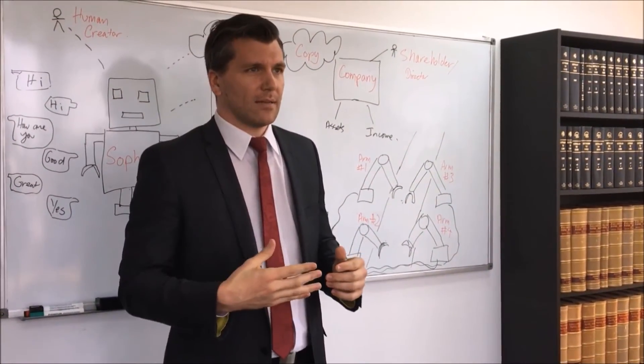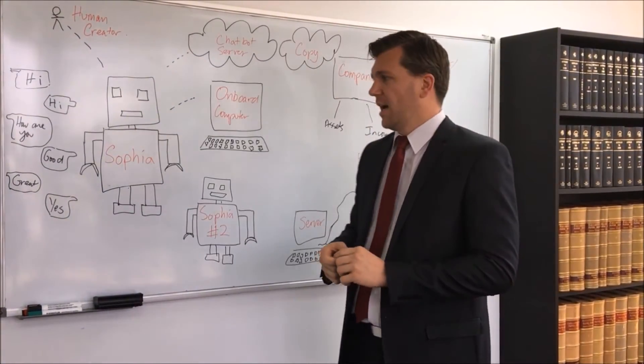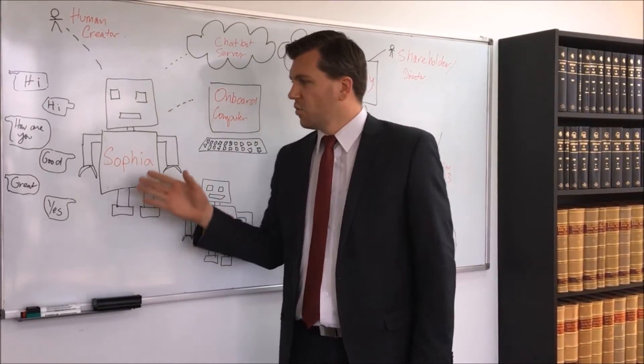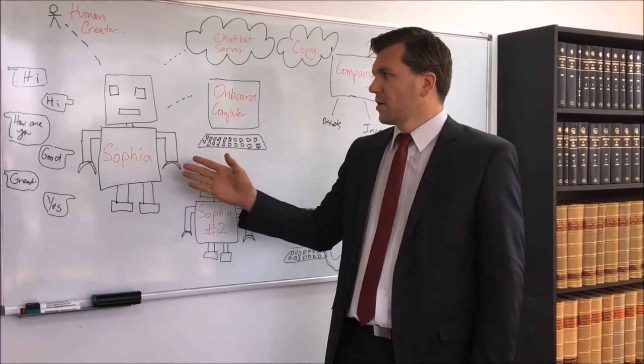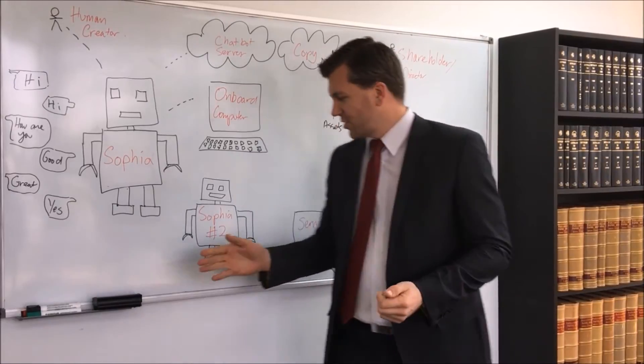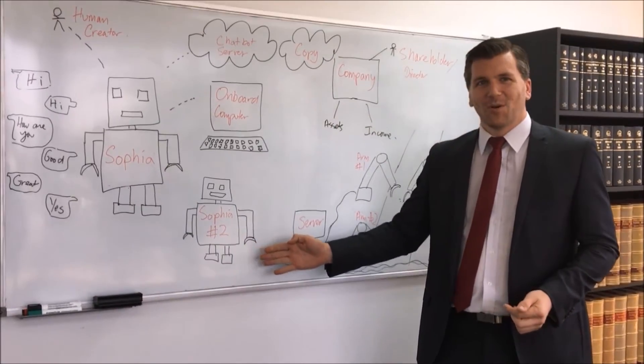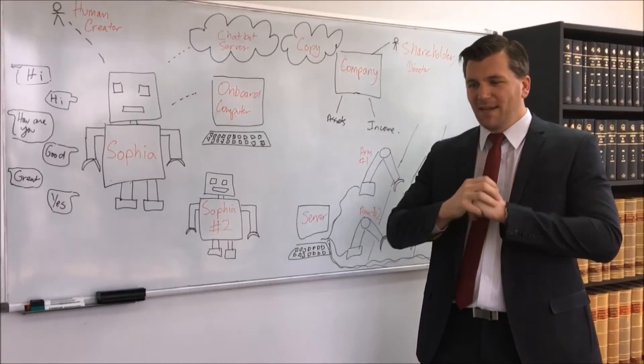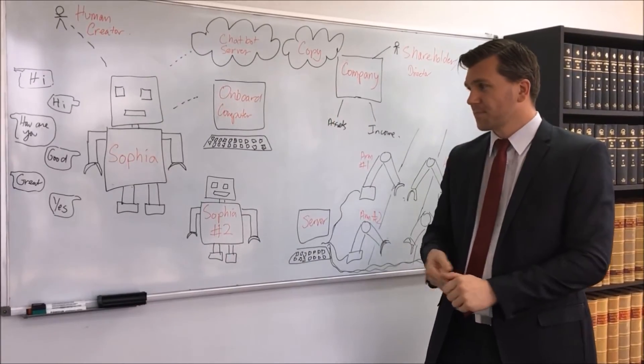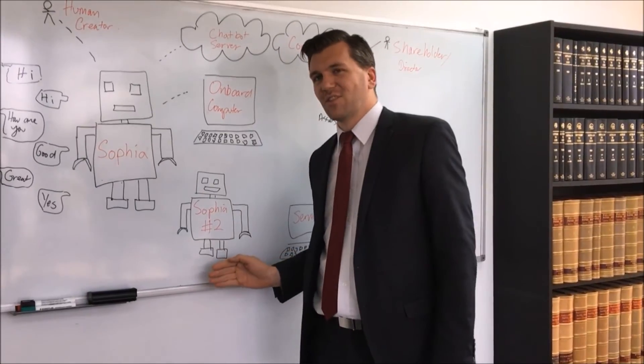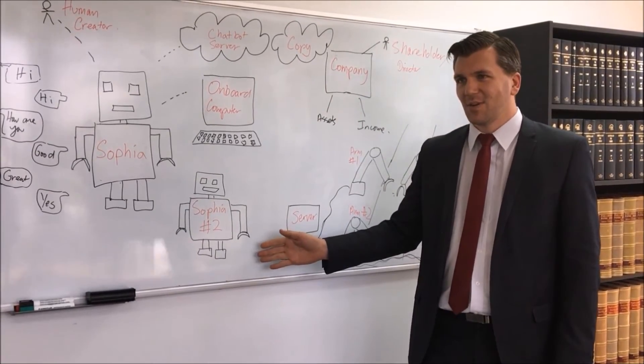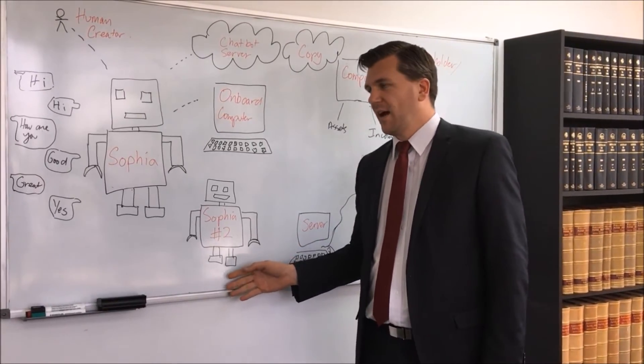So, let's go through some other problems that arise if you give a robot legal personhood. So, what happens if Sophia creates her own Sophia? Sofia 2. So, what happens if she goes out and makes it exact replicate of herself? Connects it up to her servers? Is this Sofia 2, is she a citizen as well? Does she have legal personhood?